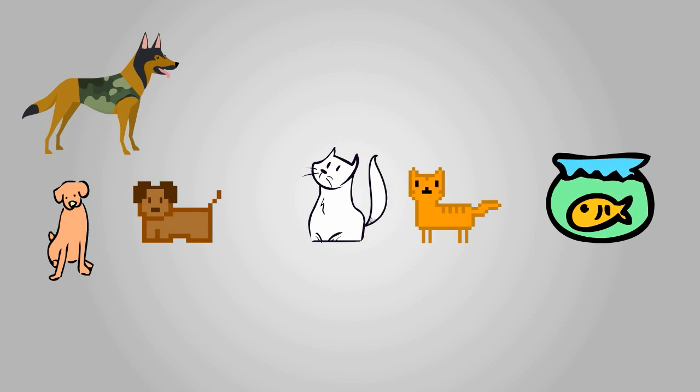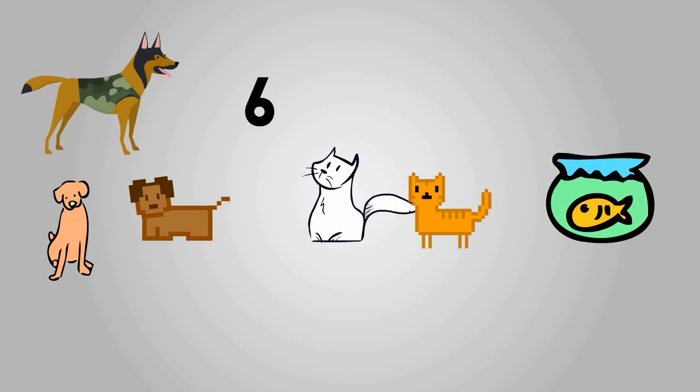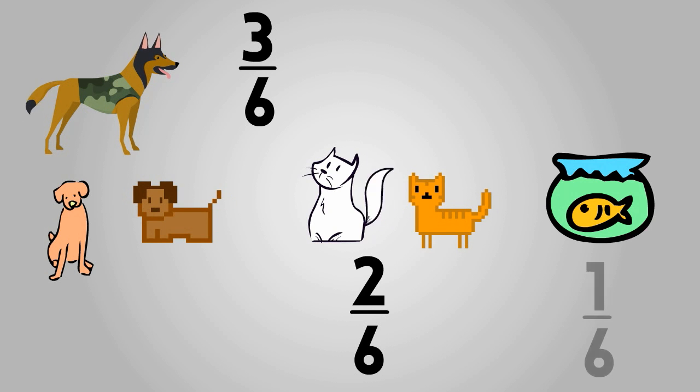If you wanted to write a fraction of your pets, the denominator would be six because you have six pets total. And you have three dogs, so that would be the numerator. You have two cats, and one fish.